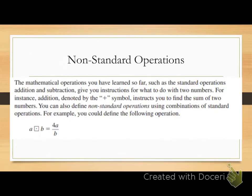The mathematical operations you have learned so far, such as the standard operations — addition and subtraction — give you instructions for what to do with two numbers. It tells us to add 3 and 5, subtract 8 and 7. It's a relationship between two numbers. For instance, addition, denoted by the plus symbol, instructs you to find the sum of two numbers. You can also define non-standard operations, which is what we're talking about today, using combinations of standard operations. That's essentially what non-standard operations are: combinations of the operations that we already know how to do.